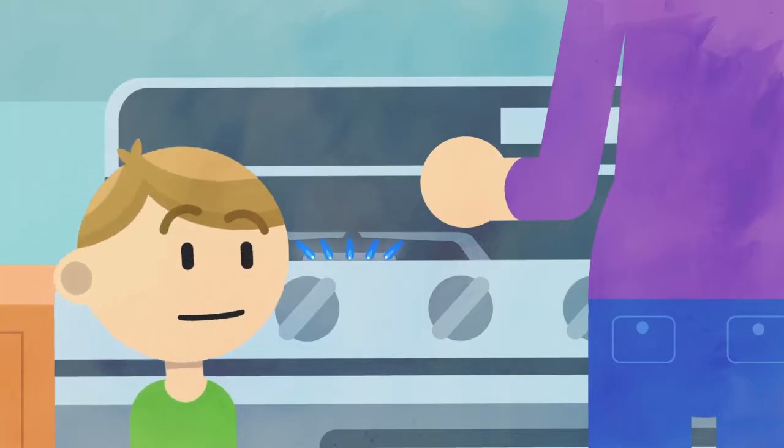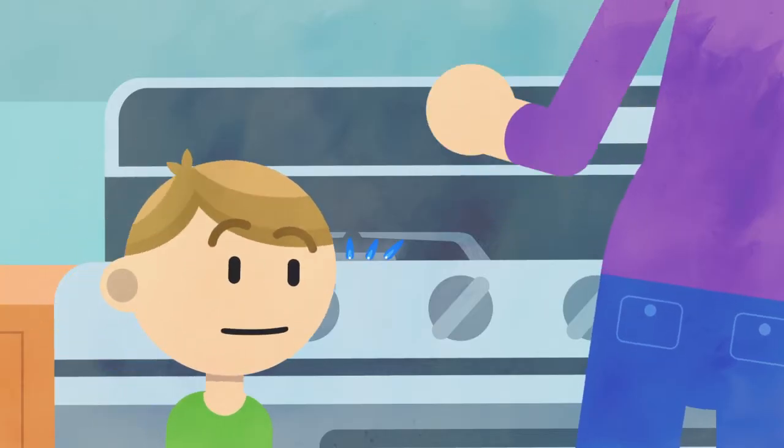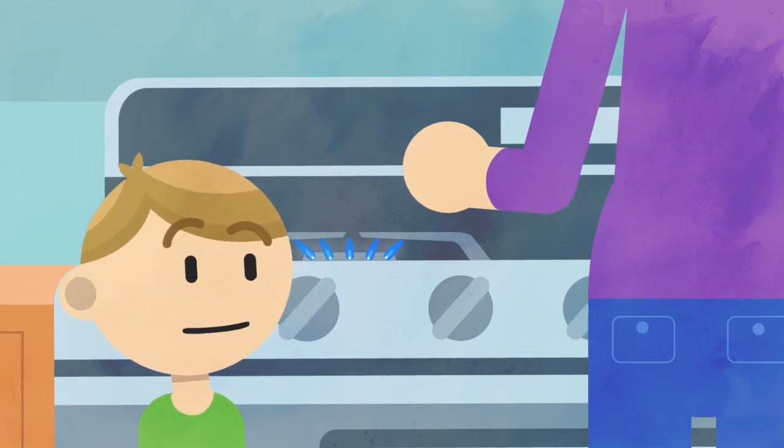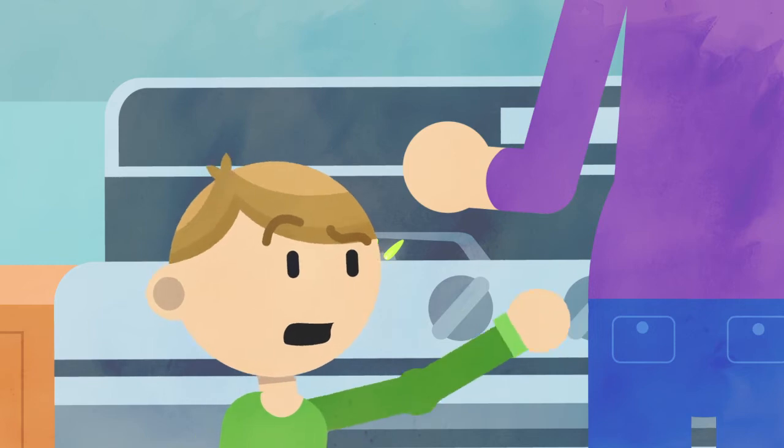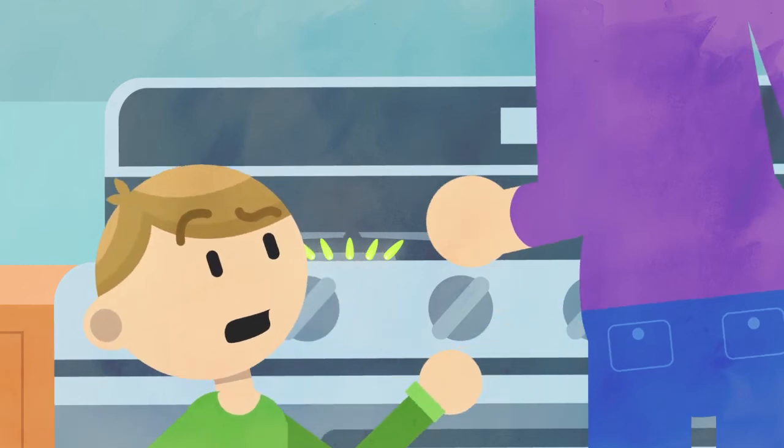You might have seen a blue flame on your stove at home. That's how you know it's working correctly. If it's bright yellow or another color, it might mean the stove isn't working correctly. So be sure to let an adult know.